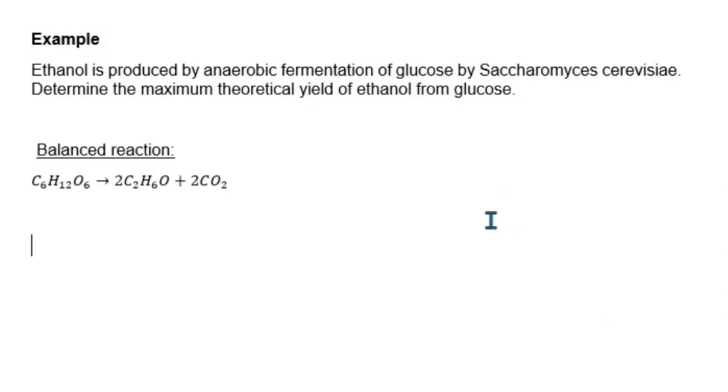To answer this question, the first step is to start with our balanced chemical reaction. From our balanced chemical reaction, we can see that for every glucose molecule, two molecules of ethanol and two moles of carbon dioxide are produced.